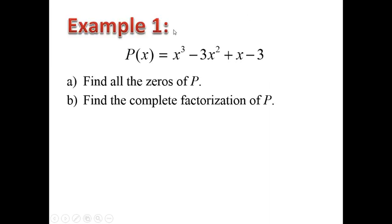Let's start with the first example. This one is called the cubic polynomial for P of x. We have x to the power of 3 minus 3x squared plus x minus 3. The first thing we want to do is find all the zeros of P, and the second thing is to find the complete factorization of P. We'll talk about part B later.